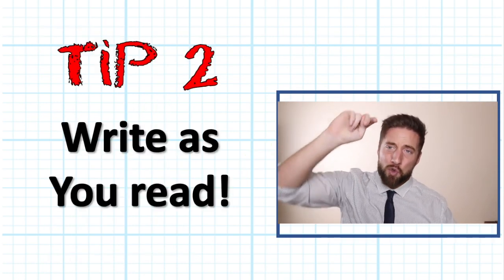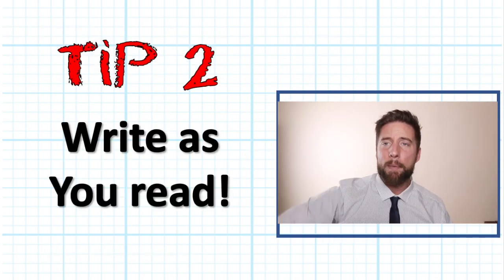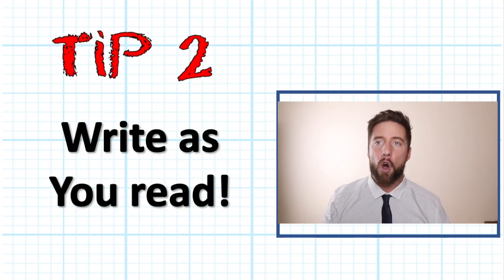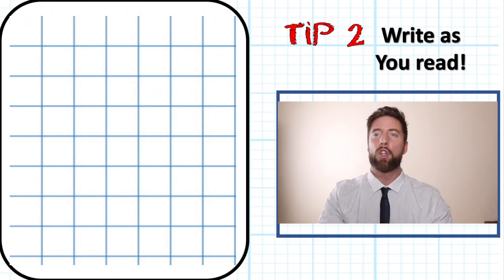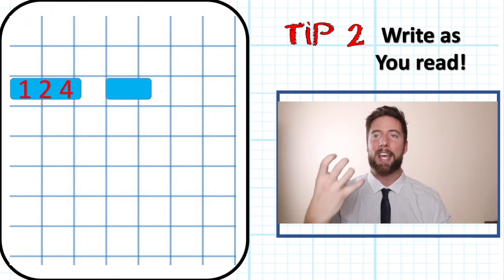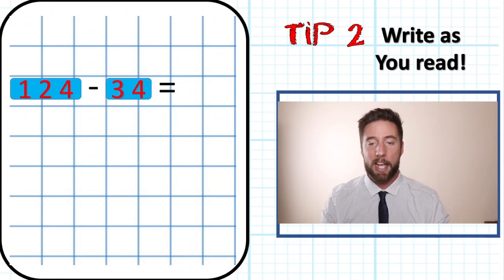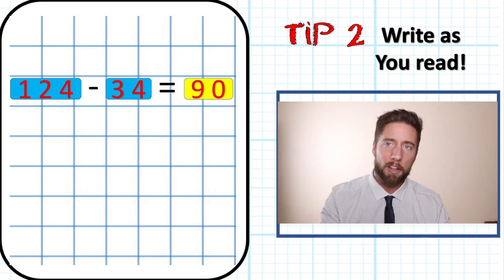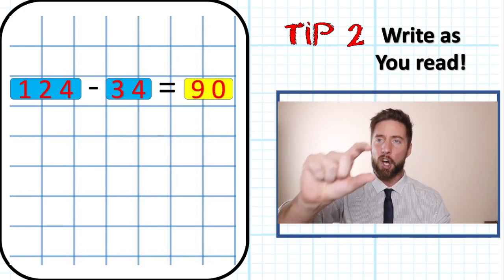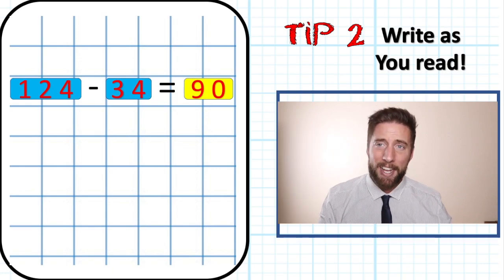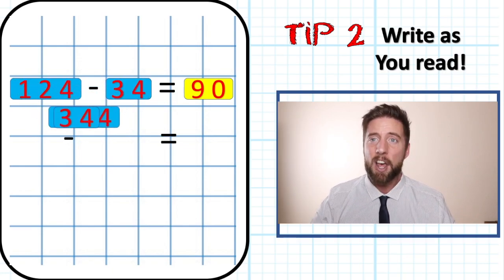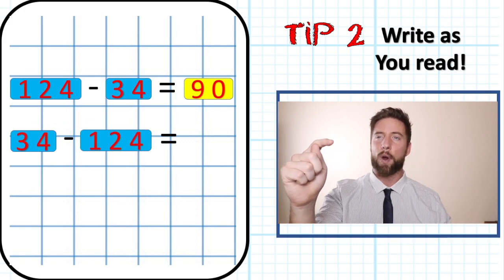Tip number two: write as you read. Remember, subtraction questions are non-commutative. You can't move the numbers in the question around. You have to write it and answer it as it is written. If it says 124 subtract 34,